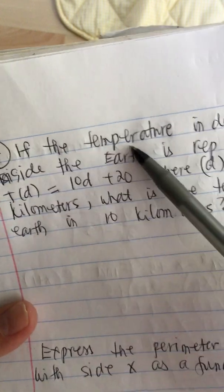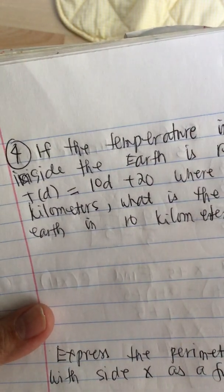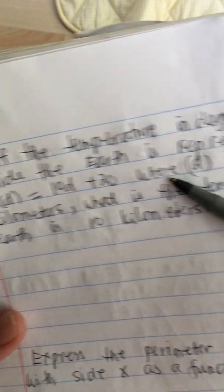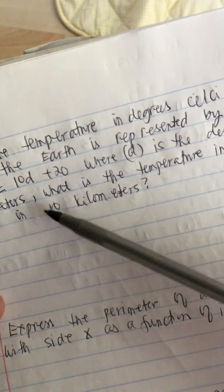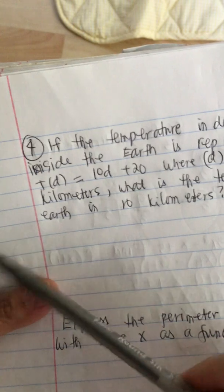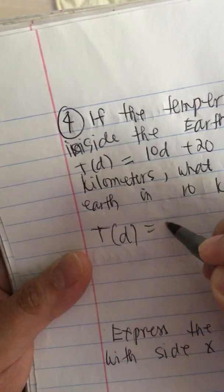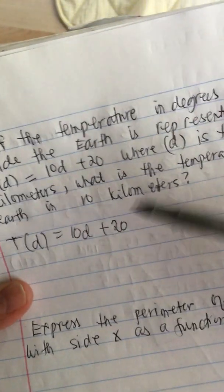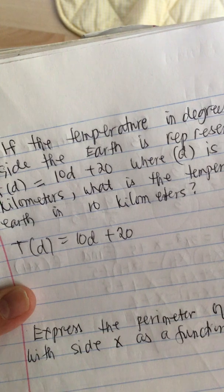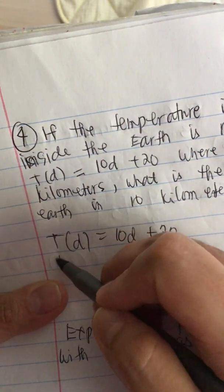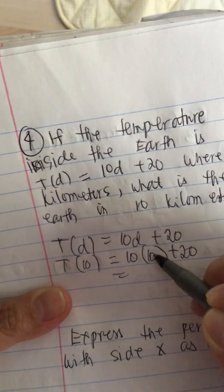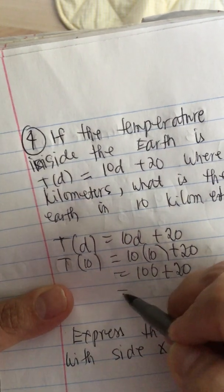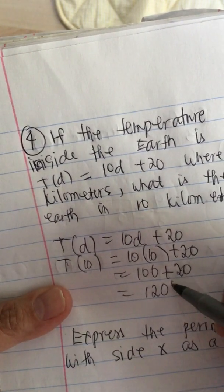Next problem: if the temperature in degree Celsius inside the earth is represented by t(d) equals 10d plus 20, where d is the depth in kilometers, what is the temperature inside the earth in 10 kilometers? So they're asking what's the temperature at 10 kilometers. Simply t(10) equals 10 times 10 plus 20, so 10 times 10 is 100 plus 20. It's equal to 100 plus 20 is 120 degrees Celsius.